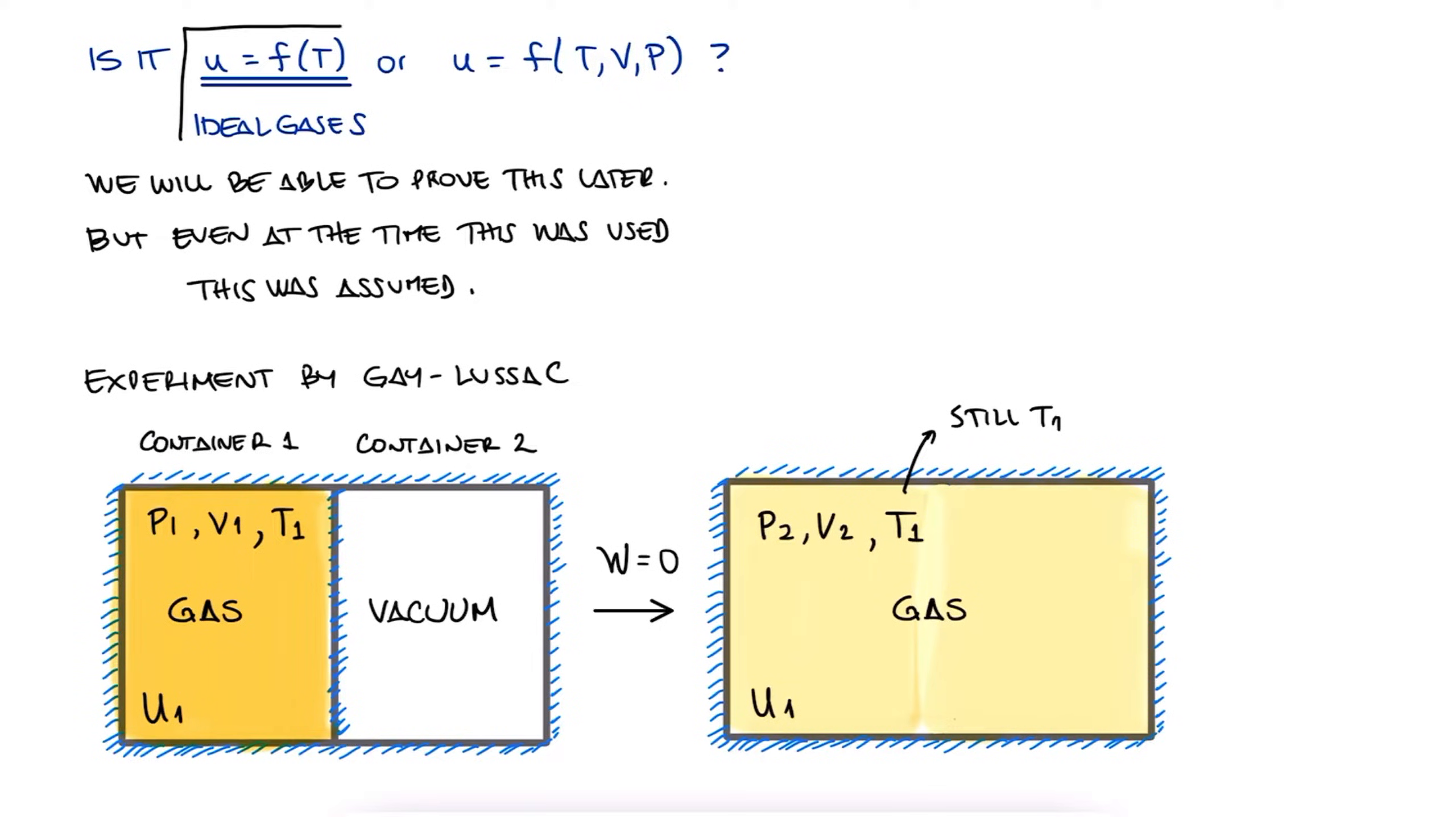This means that the internal energy of an ideal gas is only a function of its temperature. And again, we'll prove this mathematically later with the help of entropy. Worth pointing out here is that the internal energy of non-ideal gases is not a function of temperature only, and that similar experiments were later carried out by Joule, showing that for non-ideal gases, the internal energy was not a function of temperature only.